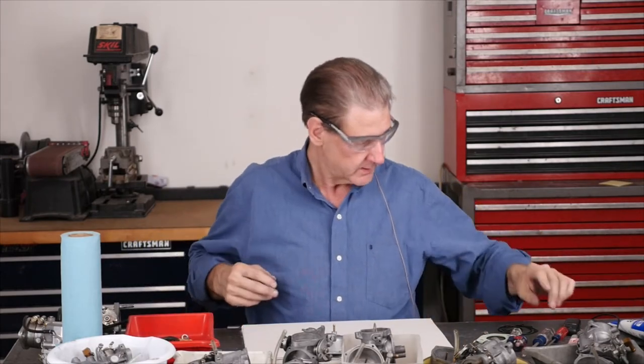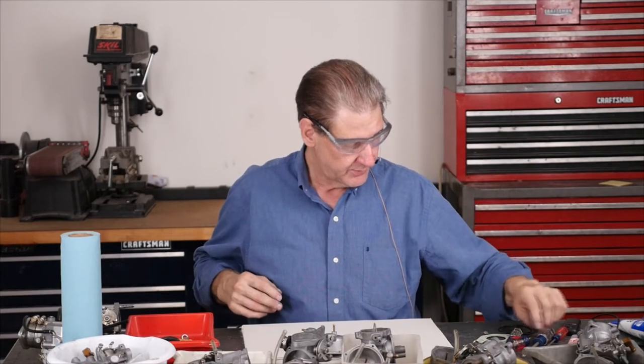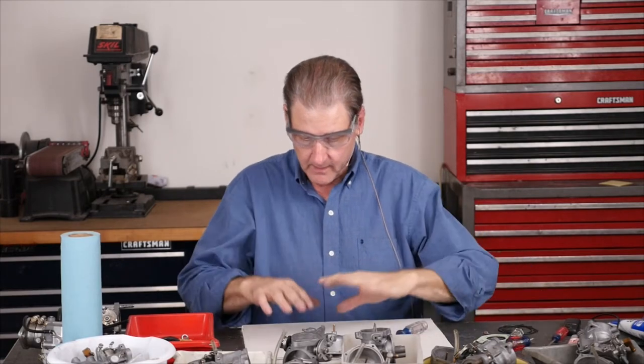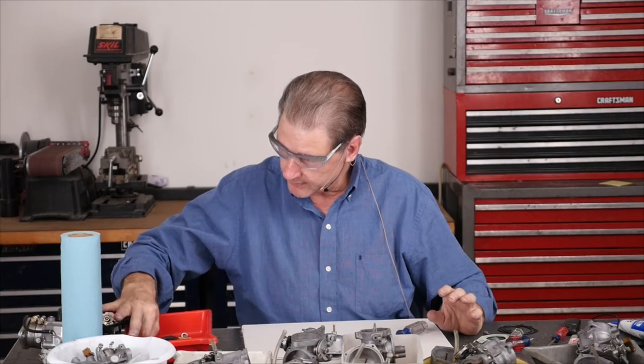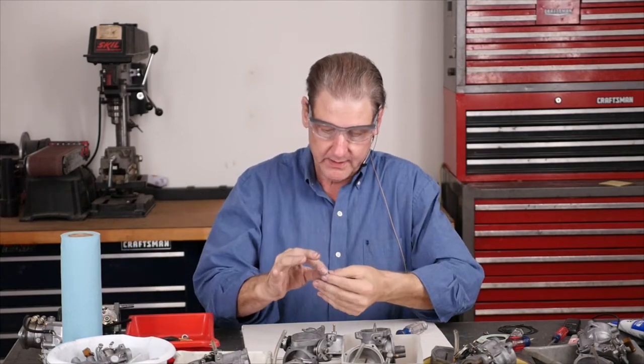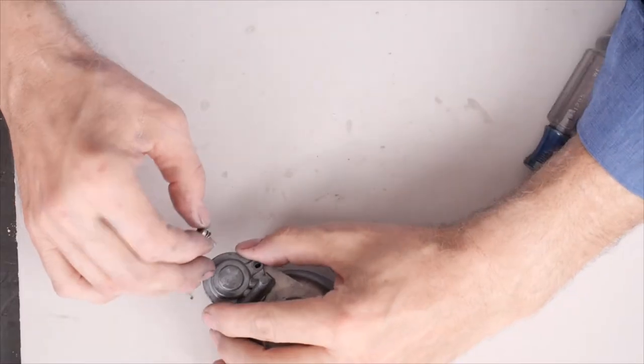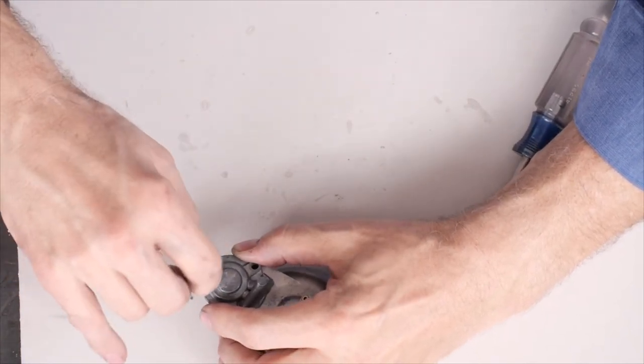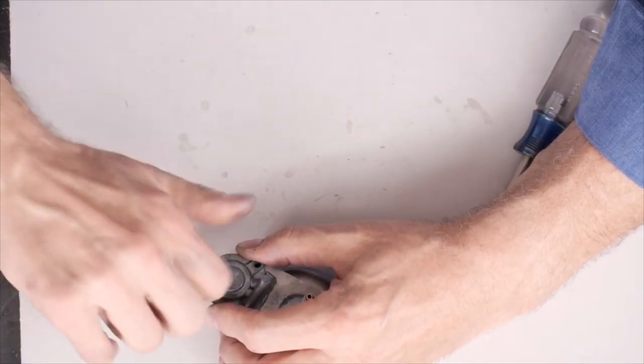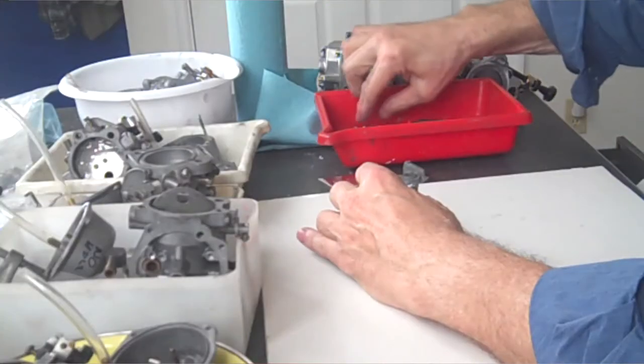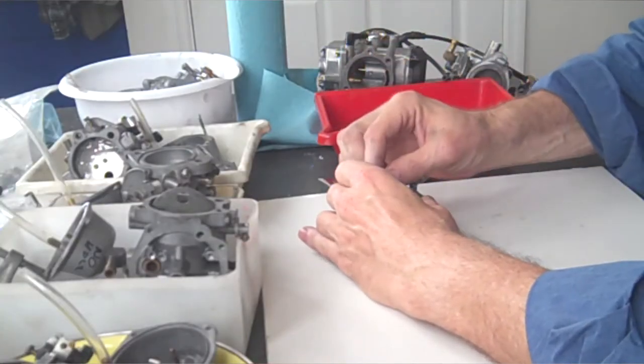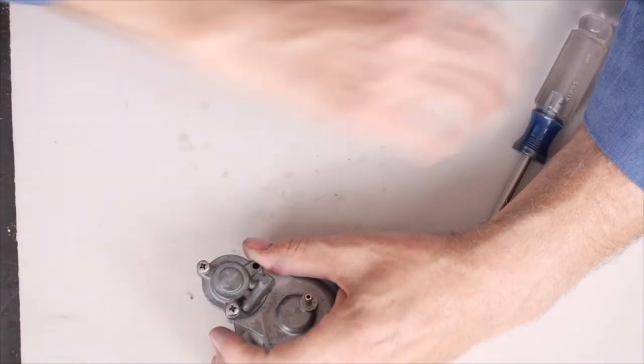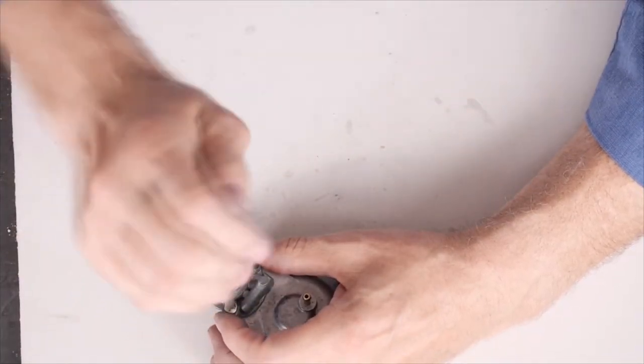So let's get organized. Find my number two Phillips here. Float bowl's ready to go on. Okay. Brand new lock washer, anti-seize, M4 by 12 screw. There's two short ones and one long one here. The long one's for the float bowl itself. And on it goes. Oh, I love when stuff fits. And on this one goes.